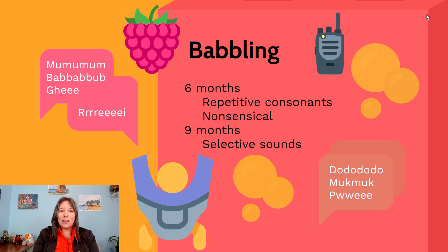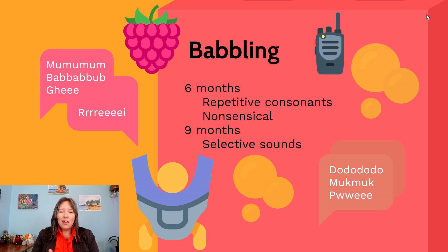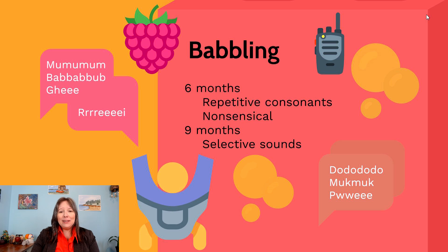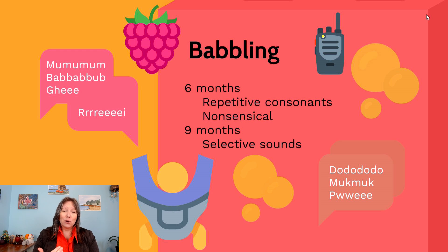From six to nine months, infants begin selectively repeating the sounds they hear more often in their environment, dropping consonants that don't exist in the language spoken at home. For example, a rolling R in Spanish, or silent H's in French — if those sounds aren't heard, they'll be dropped. Importantly, cooing and babbling at this stage is completely nonsensical; infants saying 'mum-mum-mum' or 'da-da-da' are not actually meaning their mother or father — it's practice before producing words with meaning.